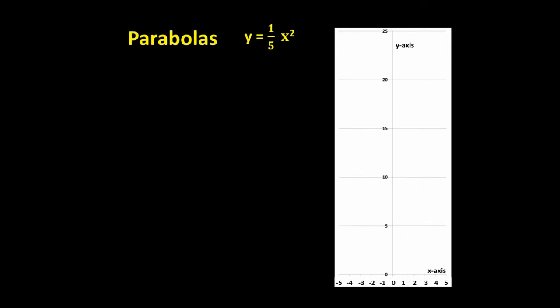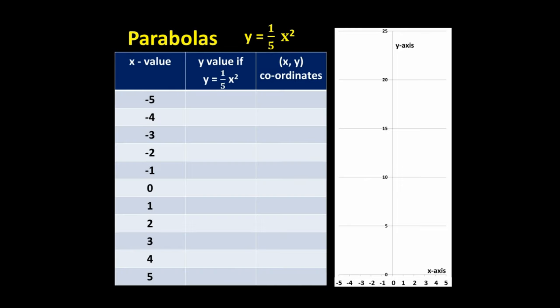If we now take the equation y equals one-fifth x squared, the values for y change. Let's now calculate the values and see the resulting shape of the curve. One-fifth of negative five squared equals one-fifth of twenty-five, which equals five, so our first point is drawn at (-5, 5), which on the graph is here.